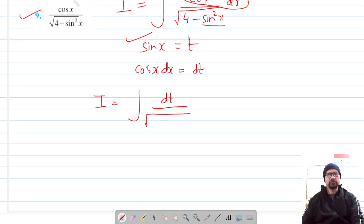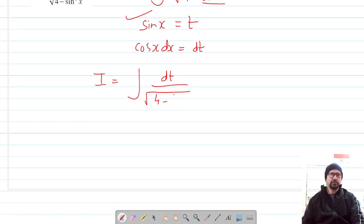Finally I can write it as the integration of dt over the square root of 2 squared minus t squared.